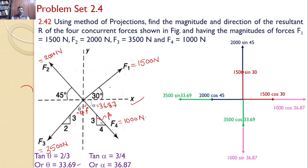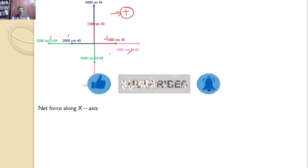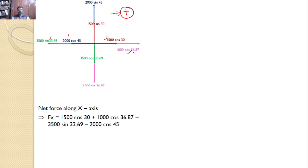All four forces have been divided along the x-axis and y-axis, giving us the final diagram. Now to find the resultant force, let us find the net force along the x-axis: Fx = 1500 cos 30 + 1000 cos 36.87 − 3500 sin 33.69 − 2000 cos 45. Simplifying, Fx = −1255.6 N.